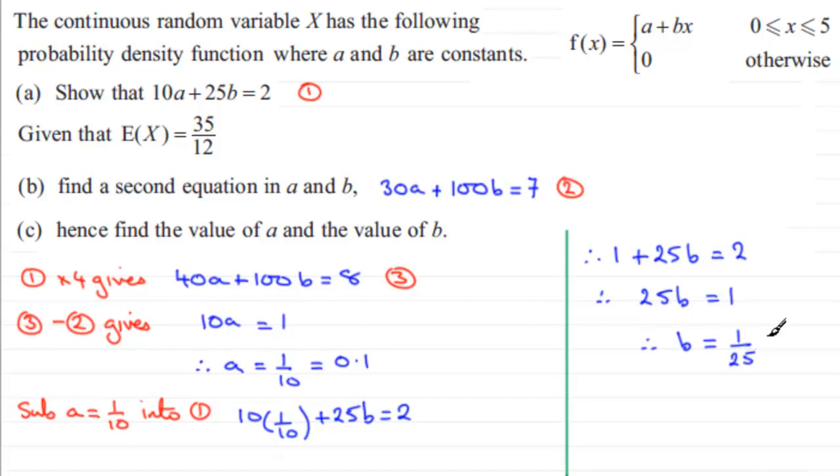That is, as a decimal by the way, 0.04. So in summary then, we can just say therefore A equals 1 tenth or 0.1, and B equals 1 25th or 0.04. Okay, so nice easy one there. Simultaneous equations then.